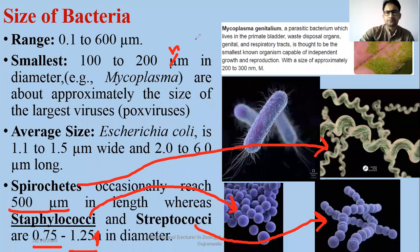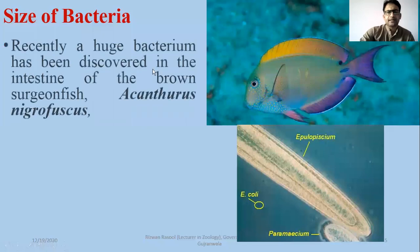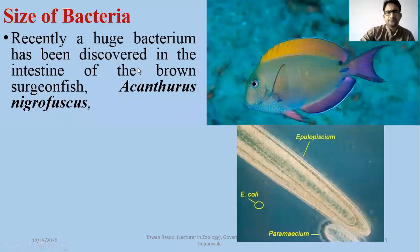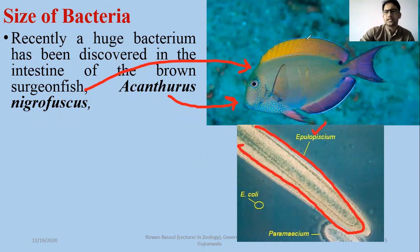In terms of size, these are the different ranges. Recently a huge bacterium has been discovered in the intestine of the brown surgeonfish, called Epulopiscium fishelsoni. It is a large bacterium observed in the gut where, by comparison, E. coli appears as a mere dot.